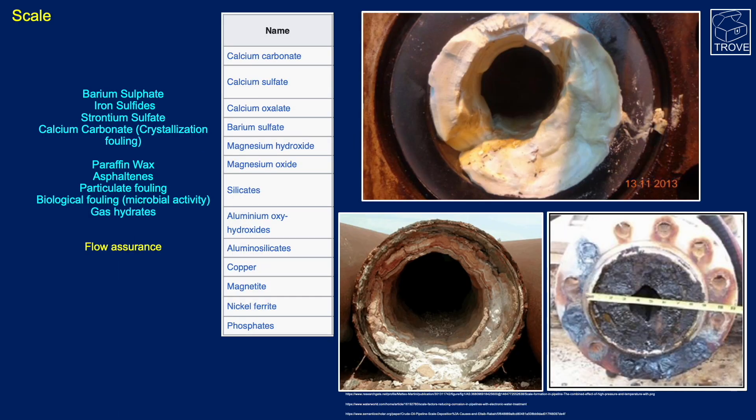This is scale, and it comes in a variety of forms. You can see these pipes here - they can get clogged up very quickly if you have incompatibility or changes in the pressure and temperature regime, which could cause precipitation of salts from the formation water within your production pipeline system. So it's very critical.